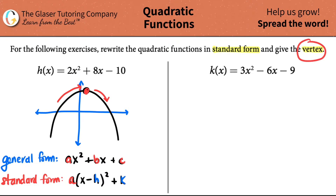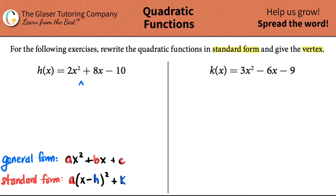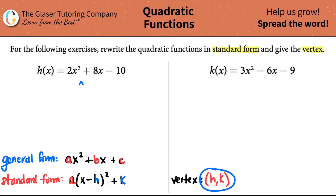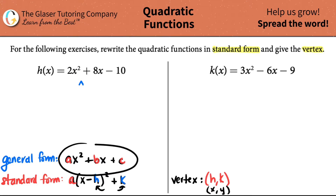We have to find that point. The vertex is always written as h comma k. You can remember this because h comes before k in the alphabet — it's like an x comma y value, just a point. Your vertex comes from the standard form because the standard form has h and k. The general formula does not. So we need to get this general formula into its standard form and then we can figure out what that vertex is.